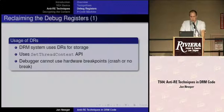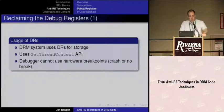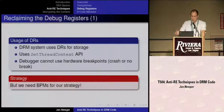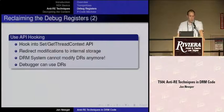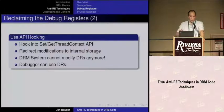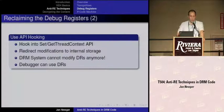The debug registers are used by the DRM system for various storage mechanisms, so the debugger cannot use hardware breakpoints anymore. Additionally, the context is set by the Windows API SetThreadContext. Since we want hardware breakpoints for our strategy, we can use API hooking in user-land to hook into the SetThreadContext and GetThreadContext APIs, redirecting any modification or read attempt to our internal storage and faking the values the DRM system expects to see. As a consequence, the DRM system can no longer modify the debug registers — which is exactly what we want.